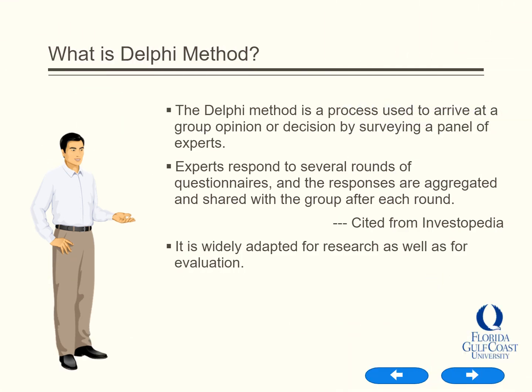The Delphi method is a process used to arrive at a group opinion or decision by surveying a panel of experts. Experts respond to several rounds of questionnaires, and the responses are aggregated and shared with the group after each round. This method is widely adapted for research as well as for evaluation.